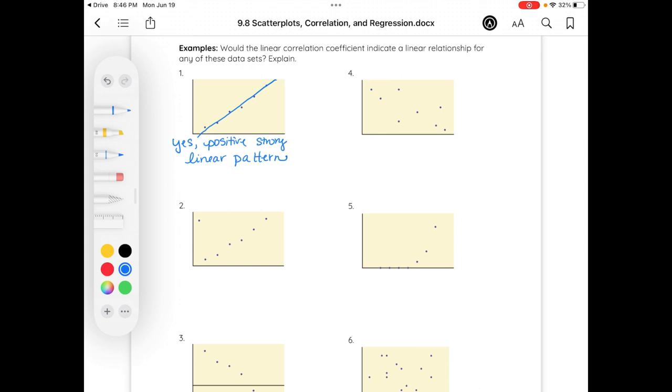Number two here. I would also say that we are in a positive direction. We do have an outlier. So it's not as strong. It might be moderately strong. It is positive in the direction. Slightly strong. Linear pattern.